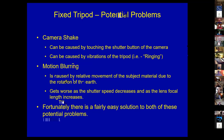Common problems with a fixed tripod include camera shake — since you're using longer exposures, any shake is recorded in the image. There's also vibration caused by the tripod itself ringing when you touch the camera: the tripod has a certain resonance and vibrates after contact. A third problem is motion blurring caused by relative movement of the subject due to Earth's rotation, which gets worse with slower shutter speeds and longer focal lengths.